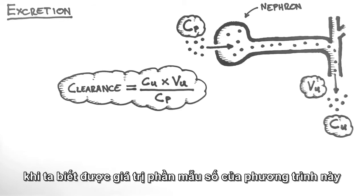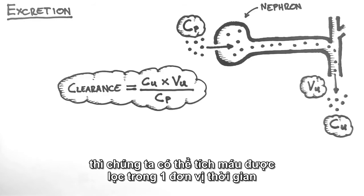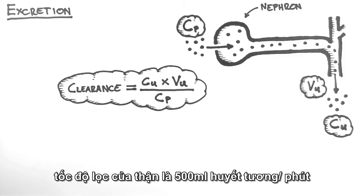When the bottom part of the equation is factored in, it will give us a volume of plasma per unit time. Thus, we can say something like, 500 ml of plasma is being cleared of the drug per minute.